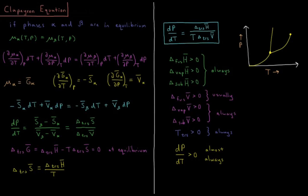This video will discuss the Clausius-Clapeyron equation in thermodynamics. Let's say we have two phases — phase alpha and phase beta — and those phases are in equilibrium with one another. From our previous video on chemical potential, this means that the chemical potential of phase alpha at a given temperature and pressure is equal to the chemical potential of phase beta at that same temperature and pressure.